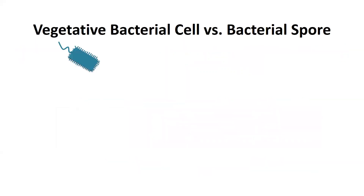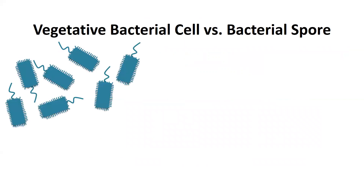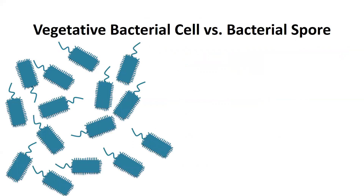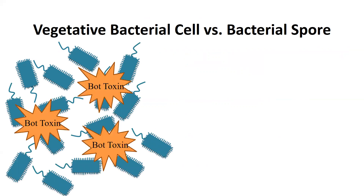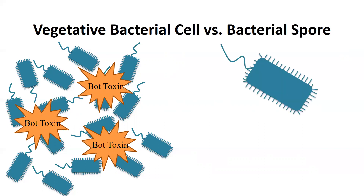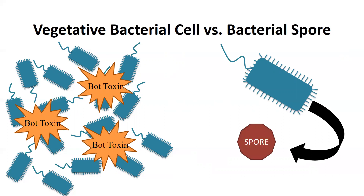Vegetative Clostridium botulinum cells are metabolizing and producing botulinum toxin under ideal conditions that include an anaerobic environment like a jar of processed food, a pH above 4.6, and a water activity greater than 0.85. When conditions are not ideal, the bacteria will sporulate. The Clostridium botulinum spores do not produce toxin. However, if the spore is put under those ideal conditions, it can return to the vegetative state and then toxin can be produced.